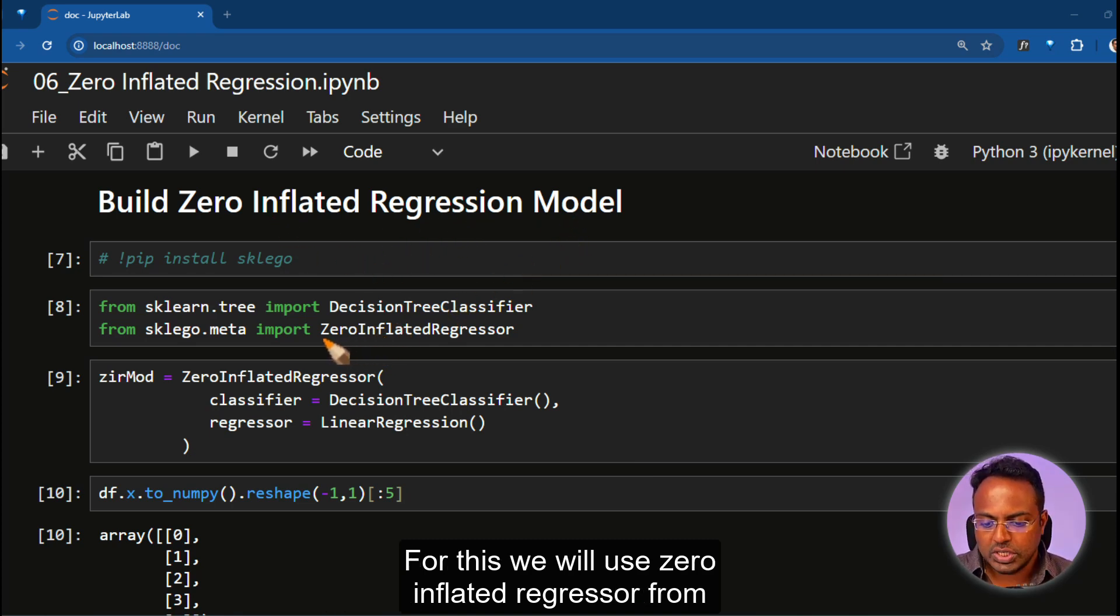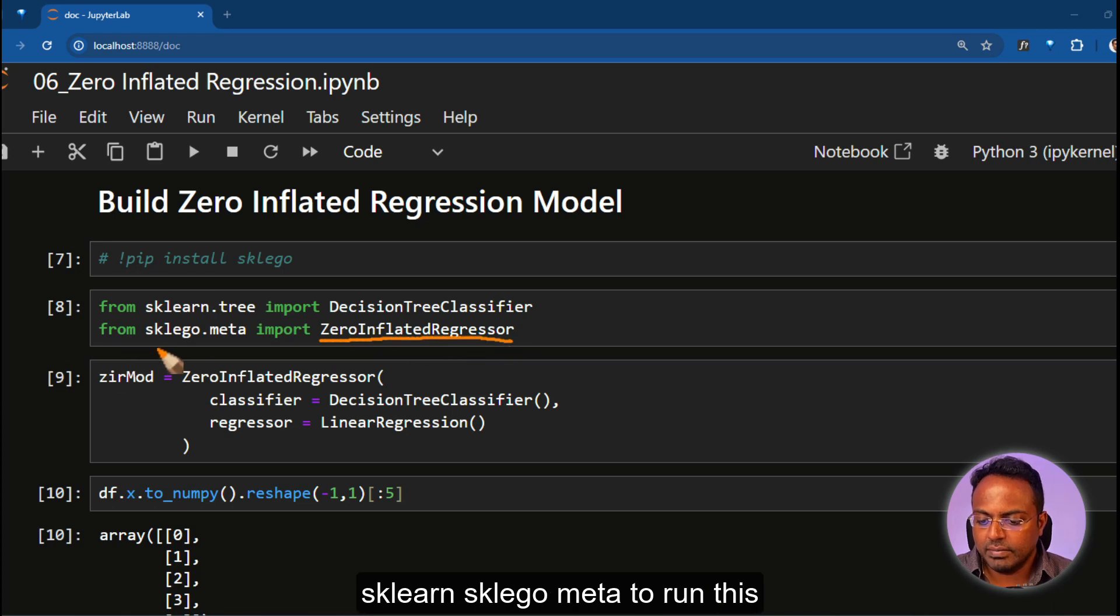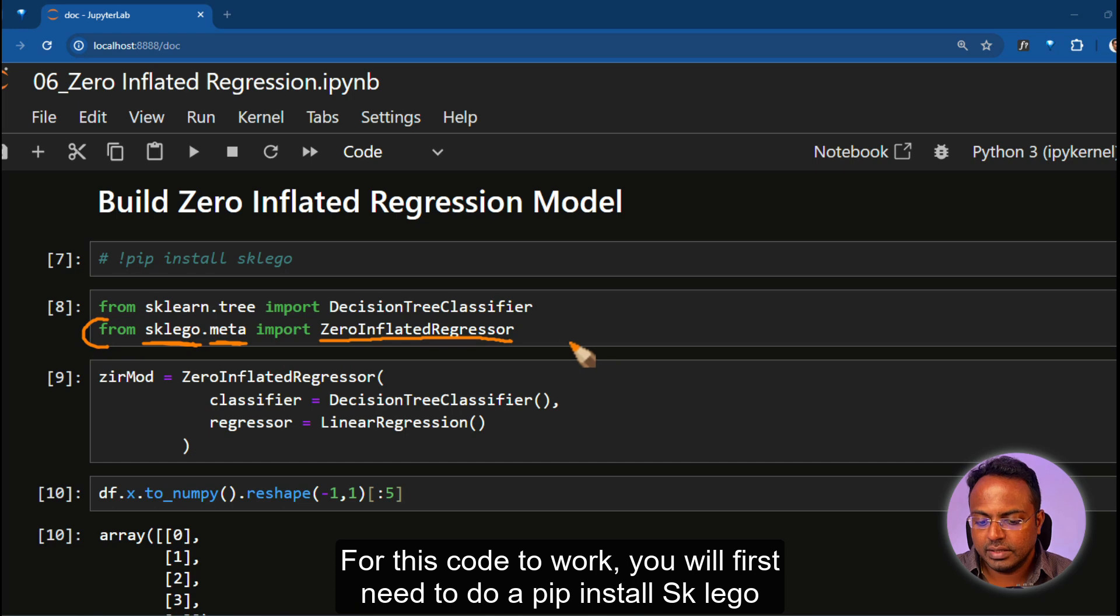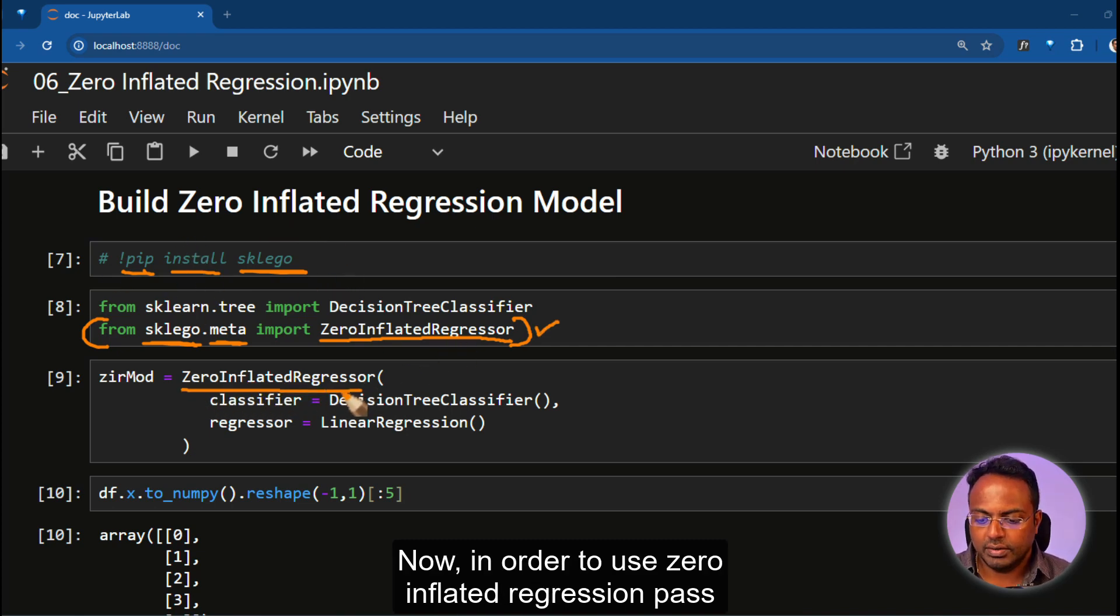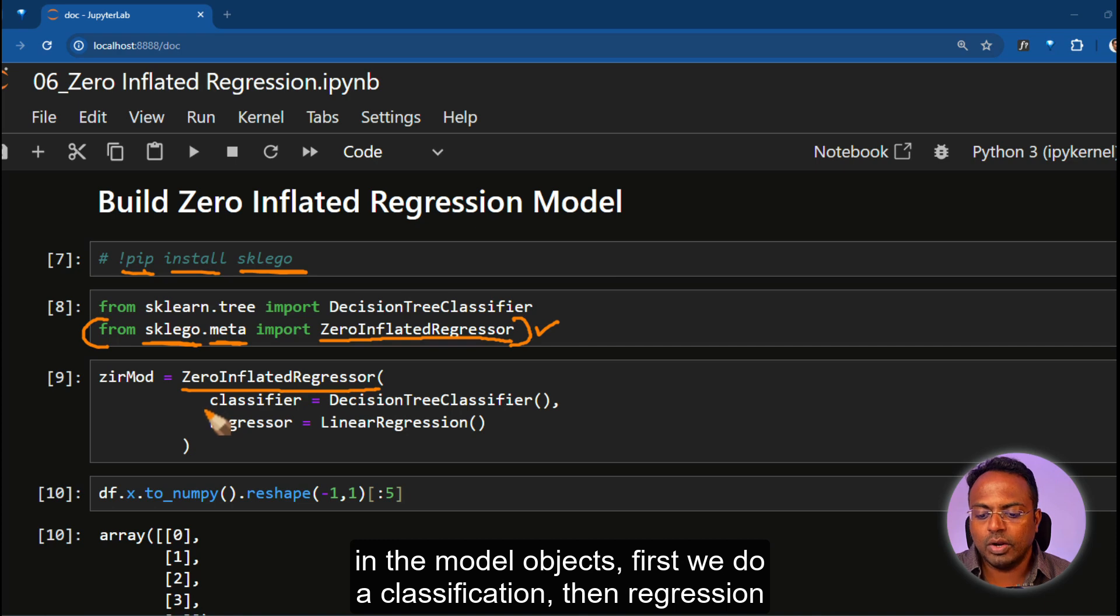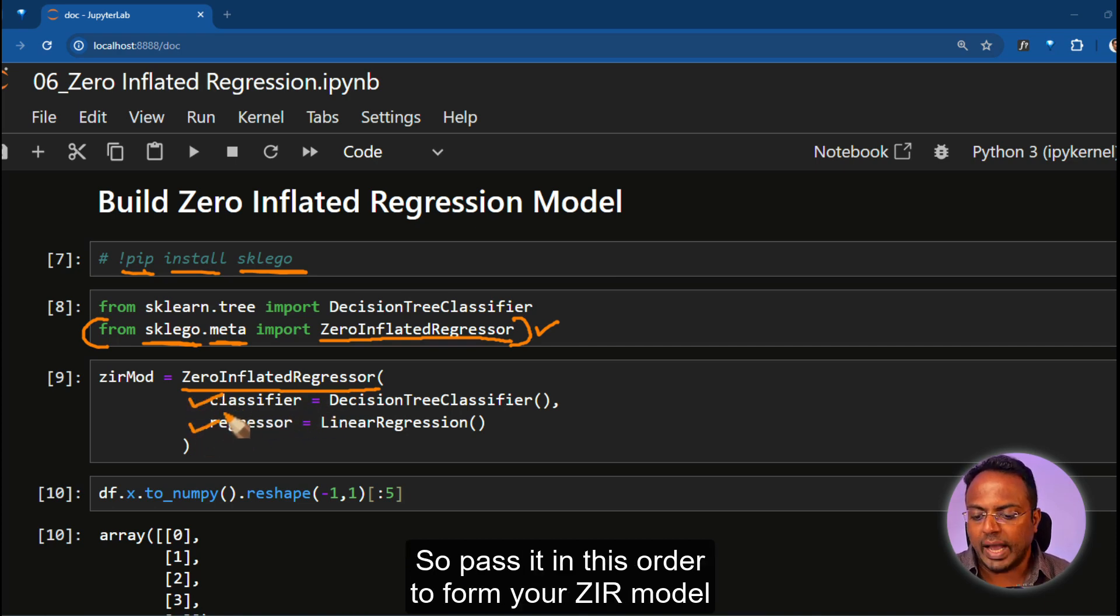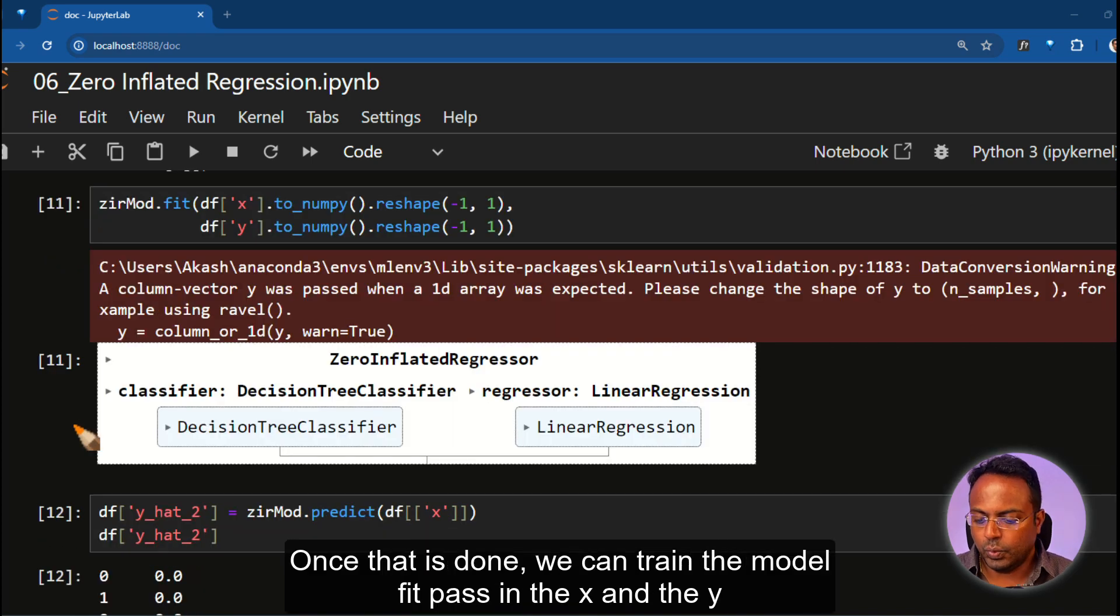So to make amends, we will build a zero inflated regression model. For this, we will use zero inflated regressor from sklego.meta. To run this, for this code to work, you will first need to do a pip install sklego. Only after this is done, this will work. Now, in order to use zero inflated regression, pass in the model objects. First, we do a classification, then regression. So pass it in this order to form your ZIR model.